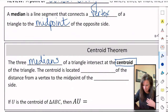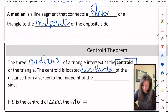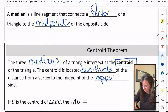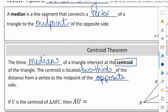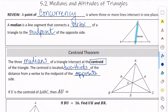Here's the cool thing: the centroid is located two-thirds of the distance from the vertex to the midpoint of the opposite side. So if U is the centroid, then AU is two-thirds of AS. AU is two-thirds of the entire median AS. Let's put that into practice.